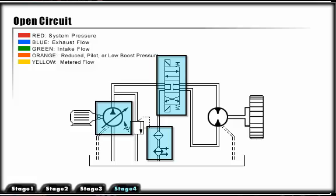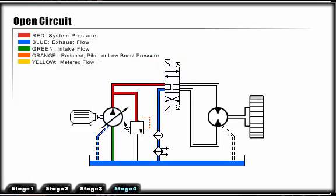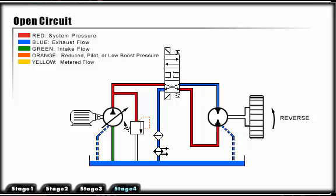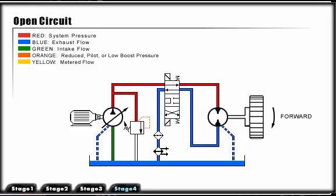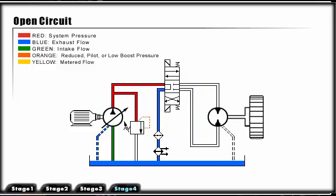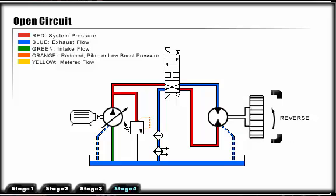The directional control valve allows for freewheeling of the hydraulic motor when centered, and reverse direction when shifted. The filter and heat exchanger will condition the fluid before it enters the reservoir. The variable pump will now allow for variable output speeds from the hydraulic motor. When the hydraulic motor rotation is restricted or stopped, the high pressure relief valve opens and protects the system from overpressurization.